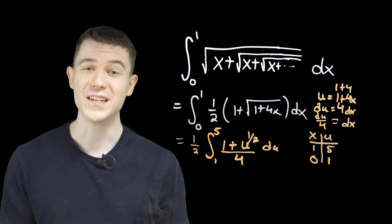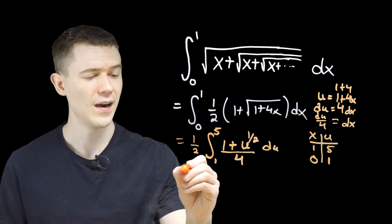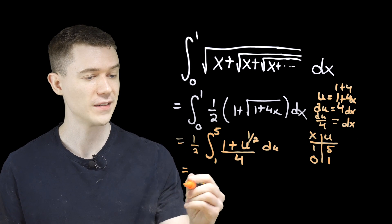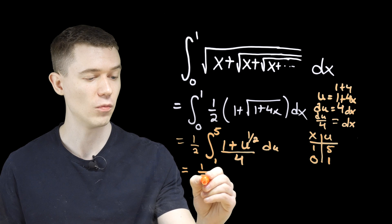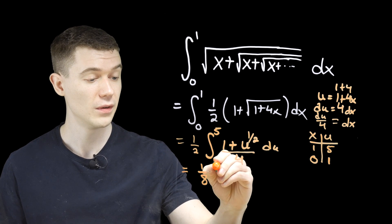We're ready to take the anti-derivative. Apply the good old fundamental theorem of calculus. I think I'll just simplify one half times a quarter. Make that one eighth. The anti-derivative of one du, that will be u.